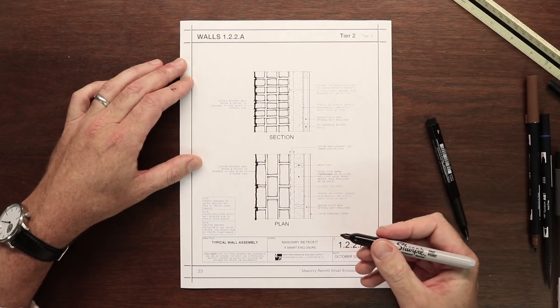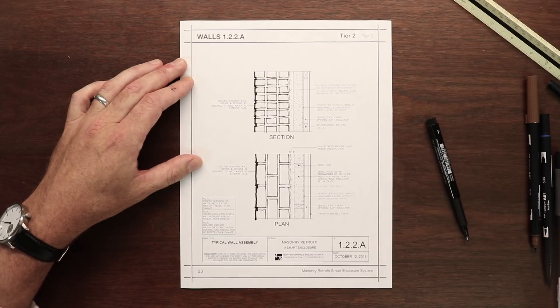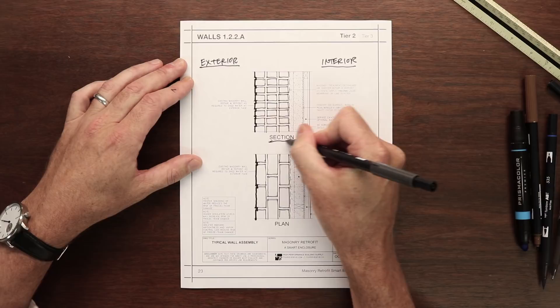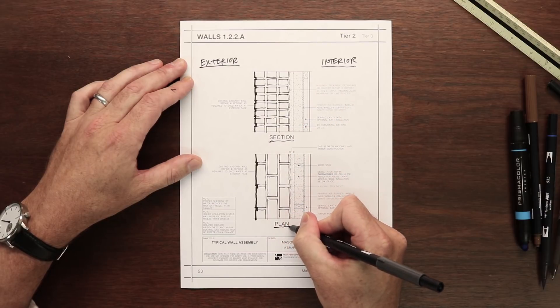So let's walk through a typical masonry retrofit wall assembly, orienting ourselves with the exterior to the left and the interior to the right. Above will be the vertical section and below the plan view.